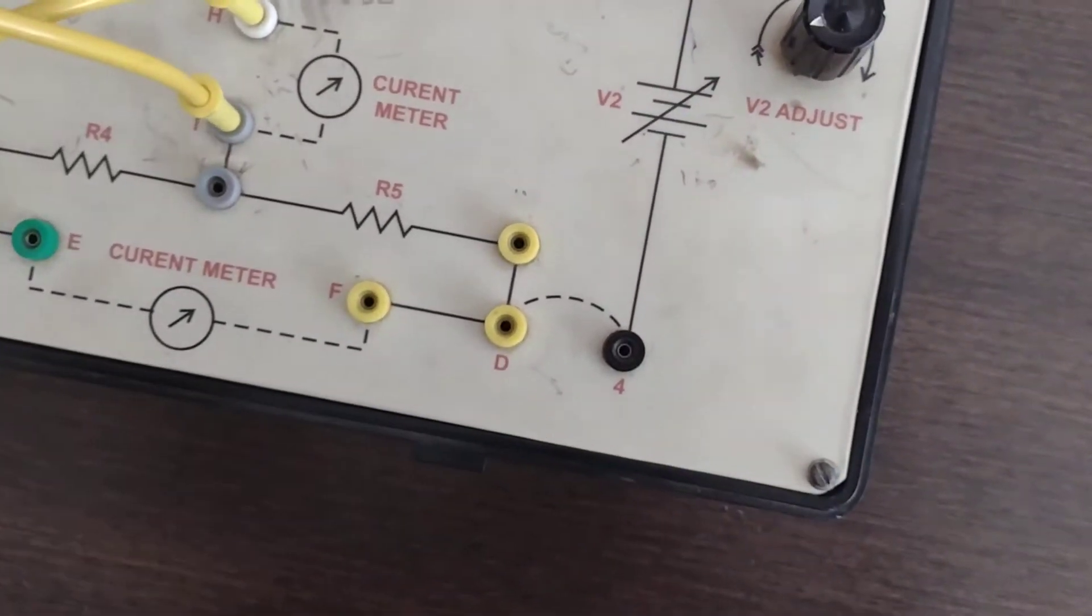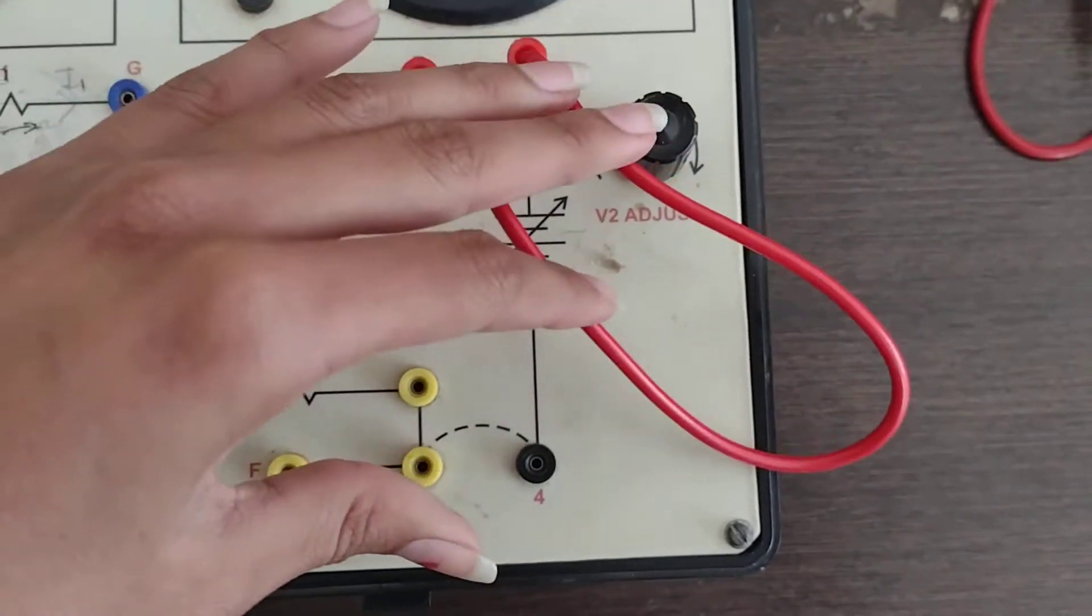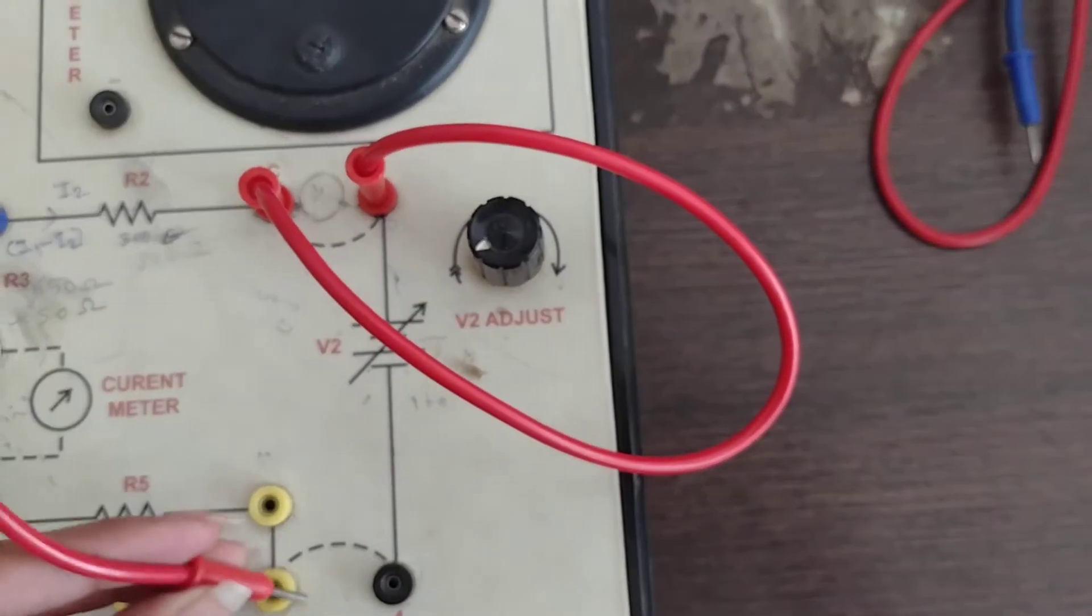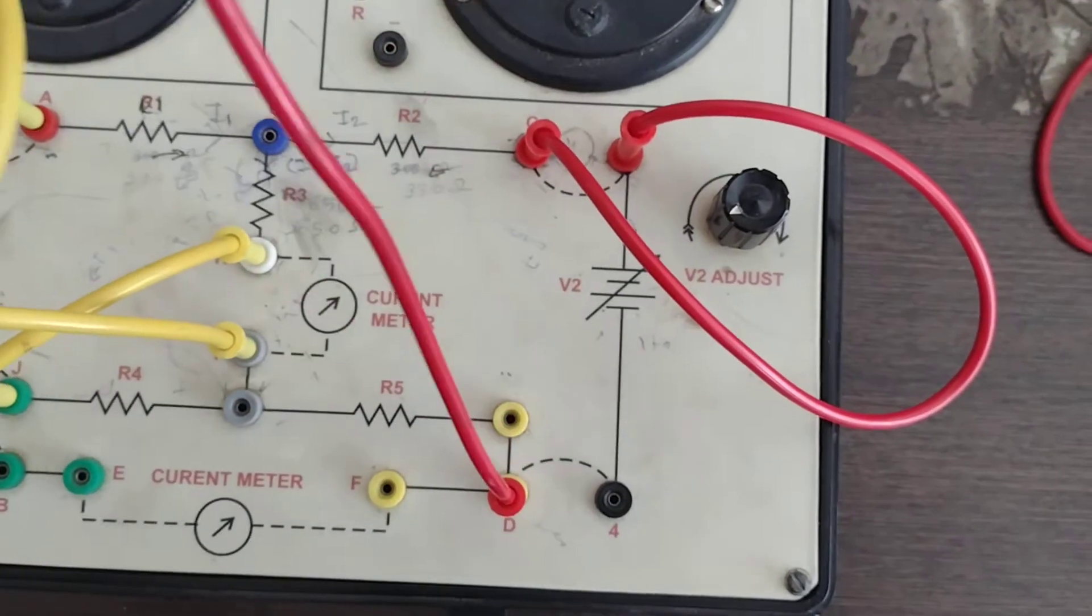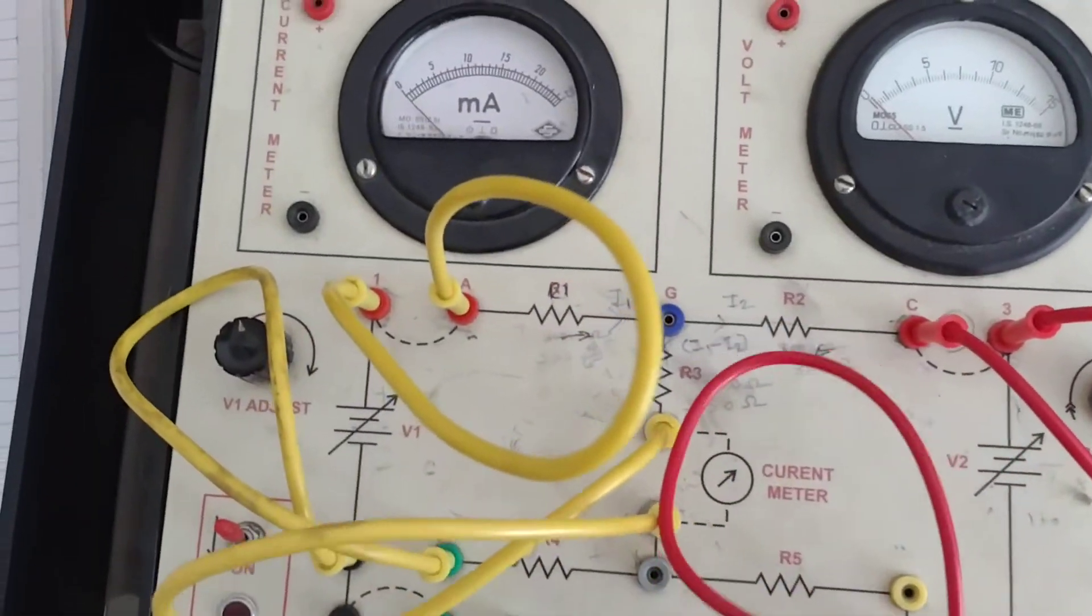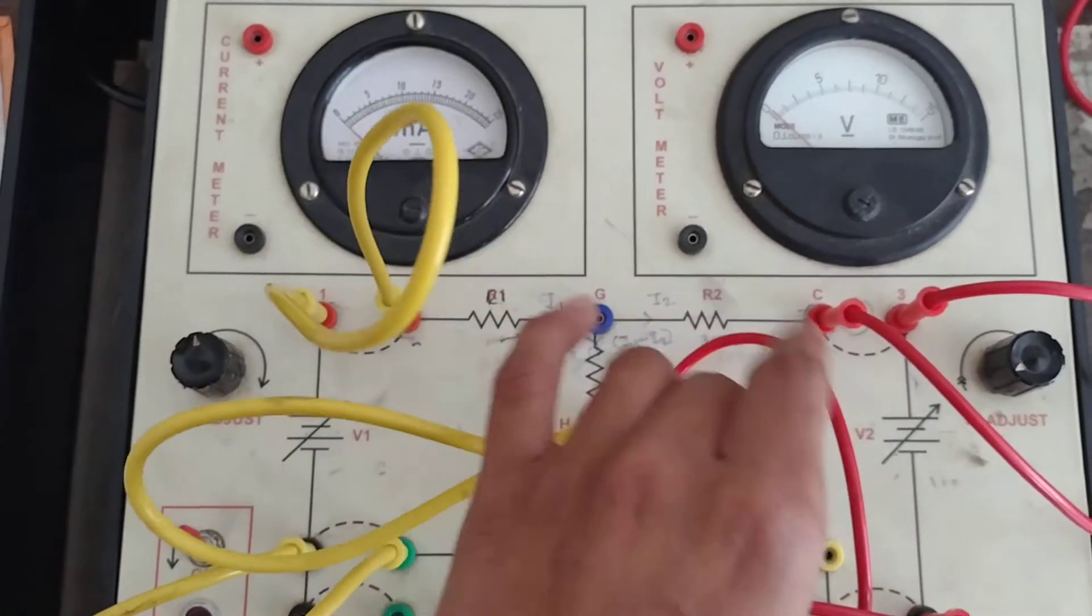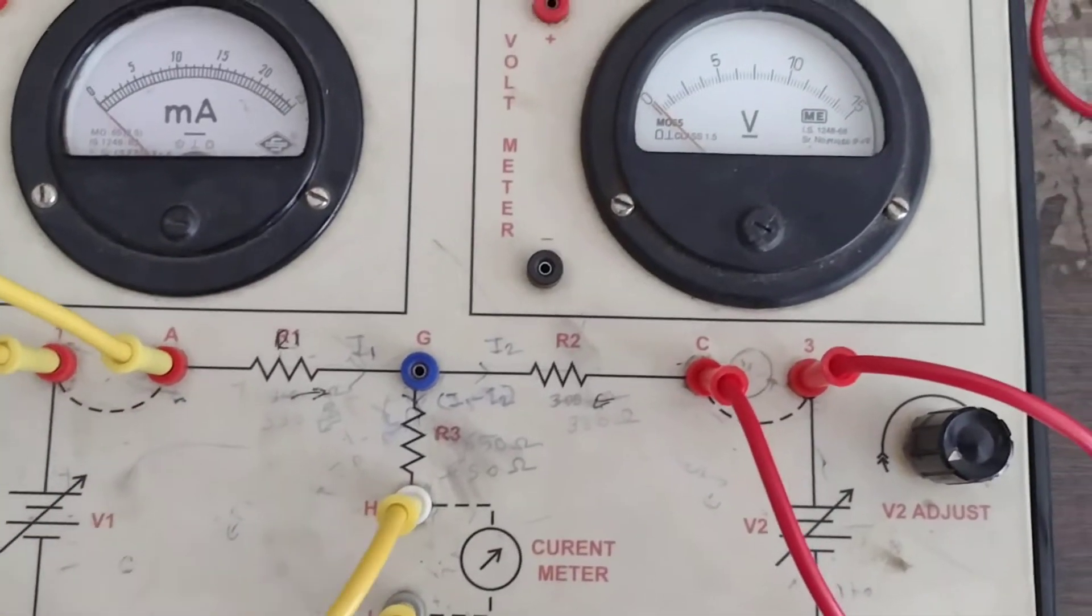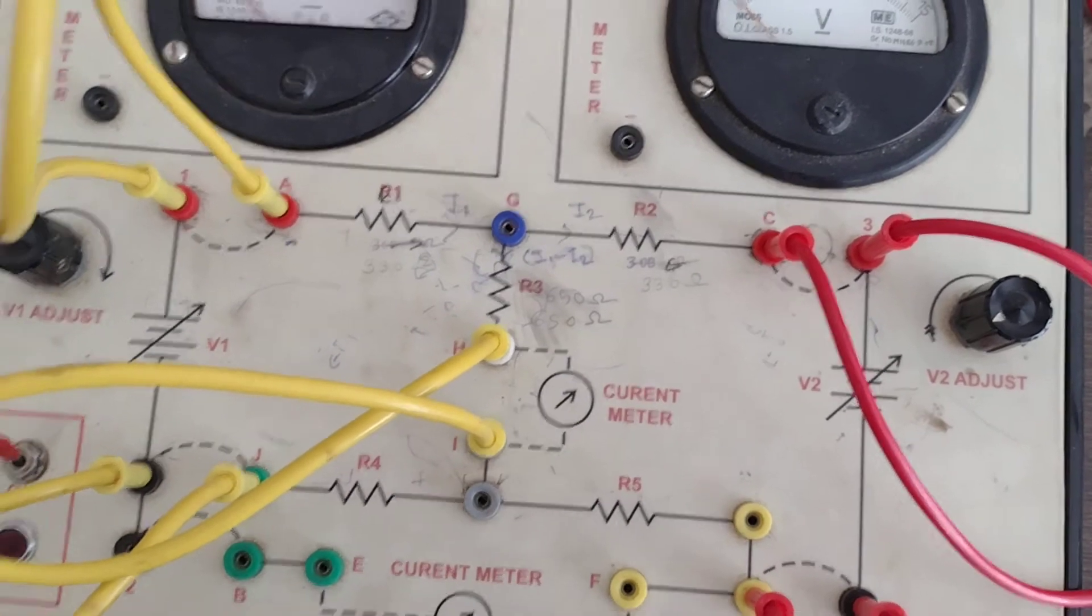Then we will connect the V2 voltage source. You can see the V1 voltage source is connected, current meter is connected, V2 voltage source is connected, and the resistances R1, R2, R3, R4, R5—five resistances are connected.